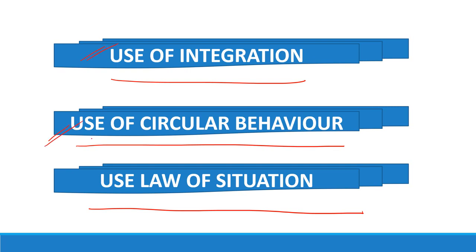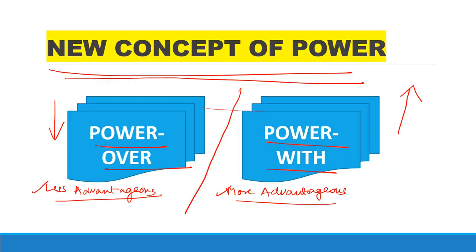According to Follett, a superior authority in an organization should not share their power with their immediate subordinate, but yes, they should create a situation such that within their own authority, the subordinate can develop their own opportunities and powers. Further, according to Follett, power with is more advantageous than power over, because power with is a self-developing entity — it is basically cooperative, encourages cooperative efforts, promotes superior understanding, and reduces conflicts.